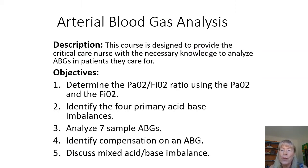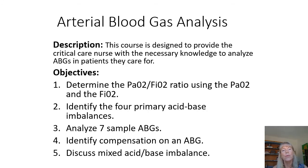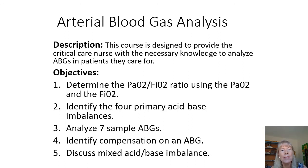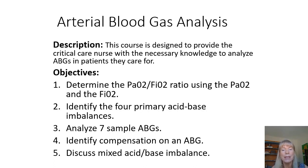The first thing we want to do is go over the objectives for this lecture. The first one is to determine the PF ratio using the PaO2 and the FiO2, and that's going to help us determine whether a patient is hypoxic or not. We are going to identify the four primary acid-base imbalances, analyze seven sample ABGs, identify compensation on an ABG, and then discuss mixed acid-base imbalances.